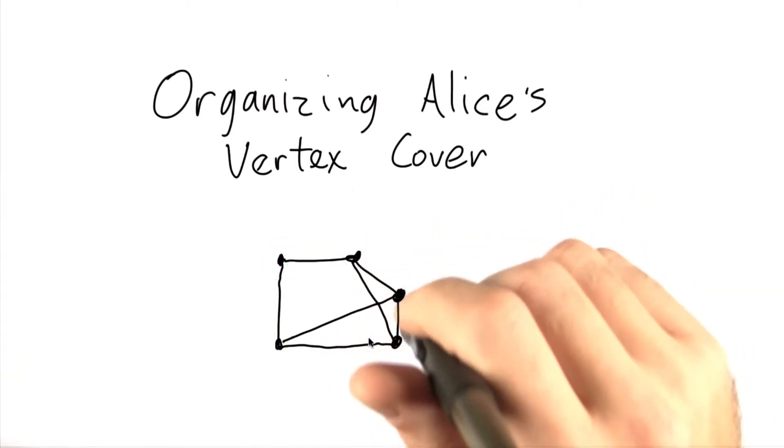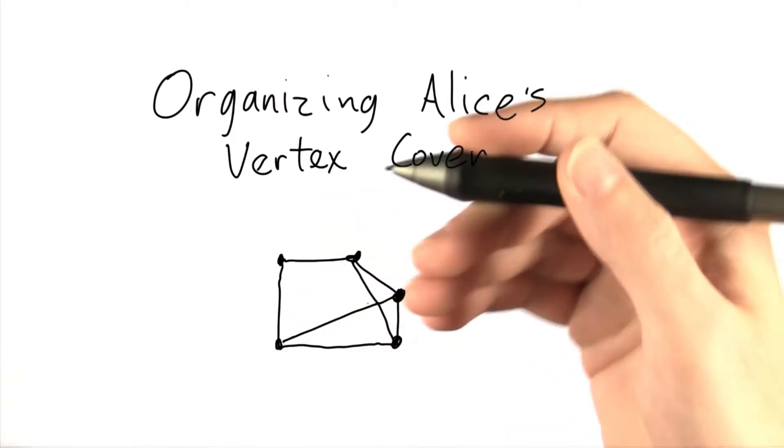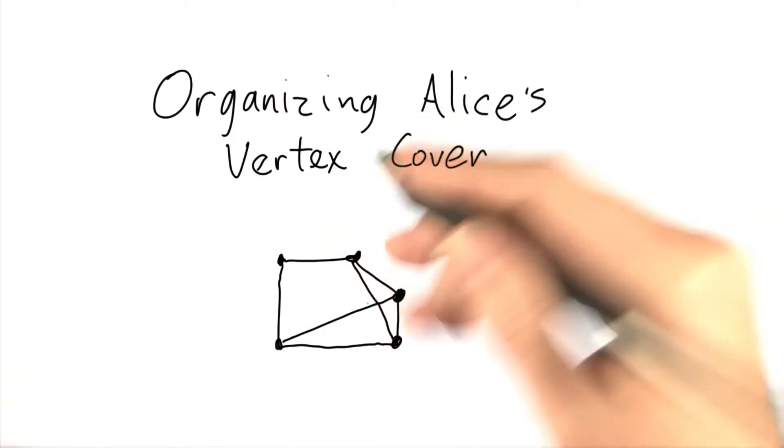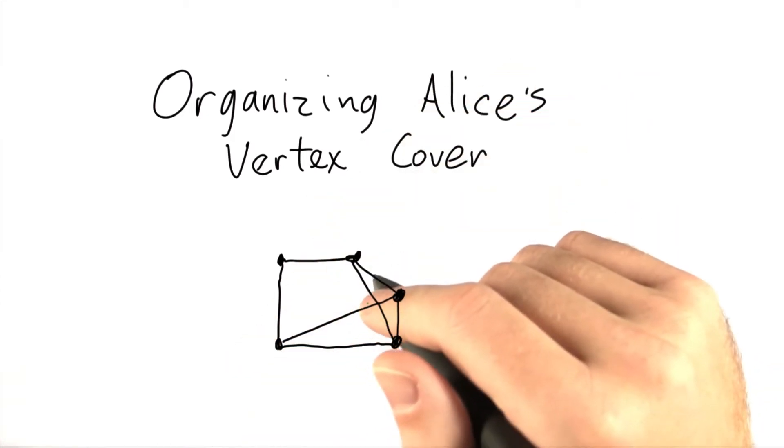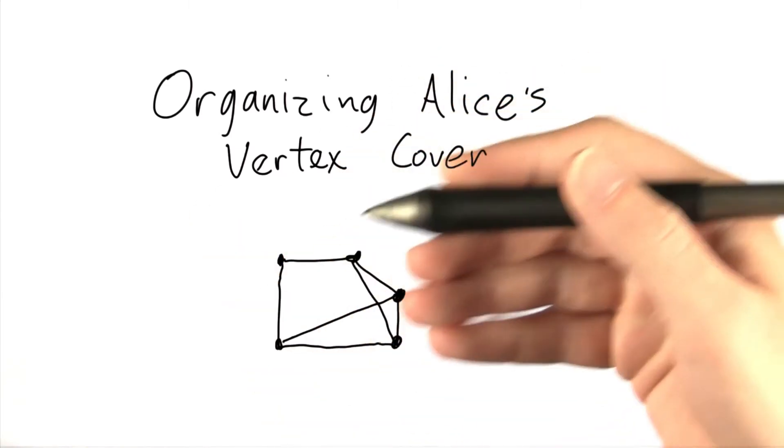What if we decide to check the vertices in order of size? That is, we're checking the covers in increasing size. So first we check a cover with zero vertices in it. That is, no cover at all.